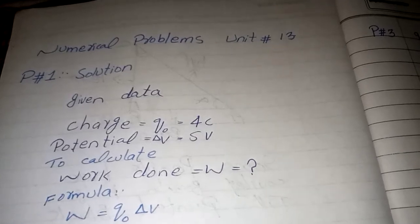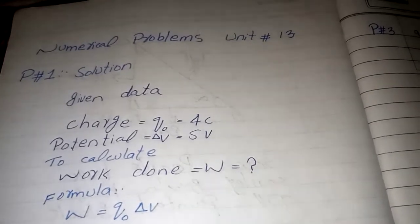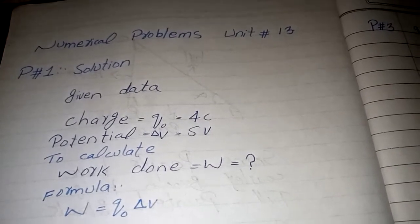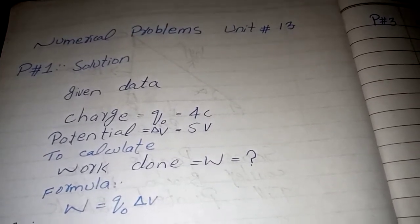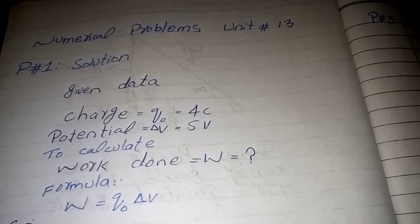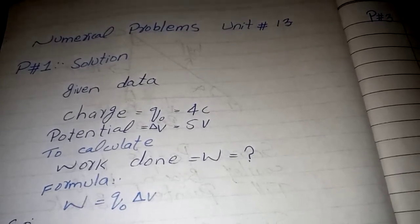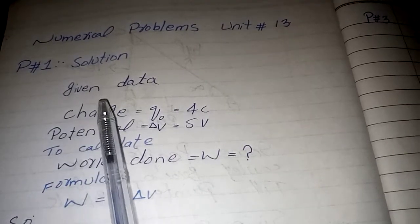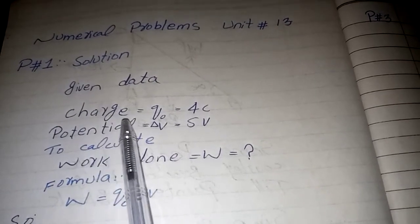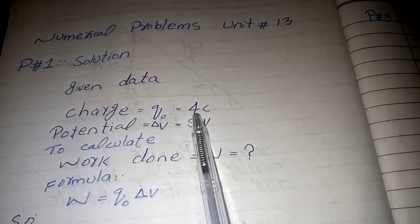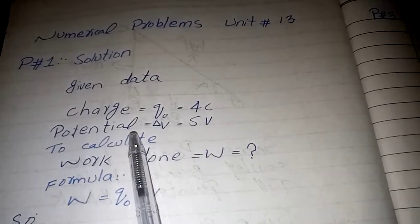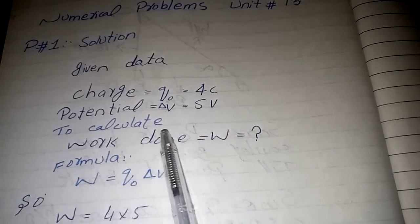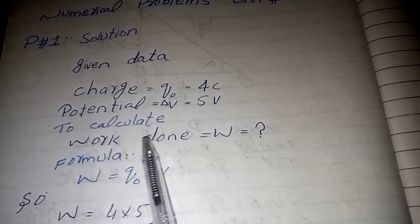Unit 13, problem number one. The statement asks to calculate the work done in moving 4 coulombs of charge across two points when the potential is 5 volts. Given data: charge is 4 coulombs and potential difference across the points is 5 volts. We are asked to calculate work done.